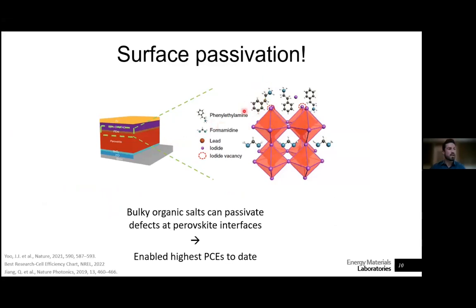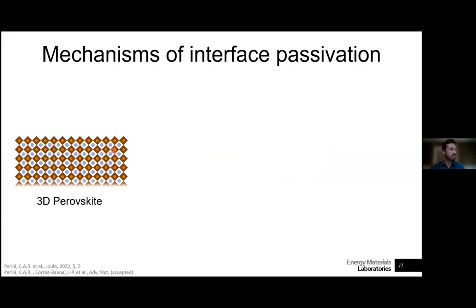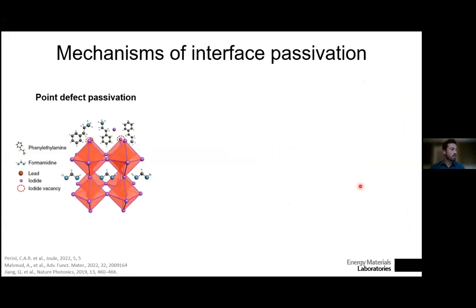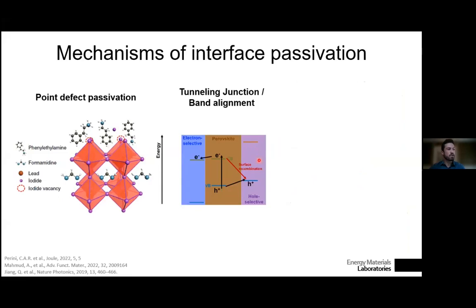The most promising approach so far is the use of bulky organic salts coupled with halide counter ions at the surface of 3D perovskite layers, which have enabled the highest performances to date. A large organic cation introduced at the surface can either sit on the very top surface or lead to reconstruction of the interface into low-dimensionality structures — for example a Ruddlesden-Popper structure with n equal to 2, where n is the number of corner-sharing lead halide octahedra spaced by the bulky cations. Passivation can happen via interaction with vacancies at the top surface, or by preventing recombination across an interface.